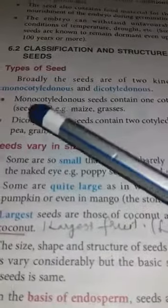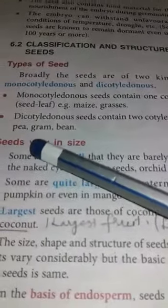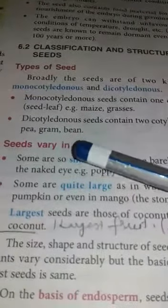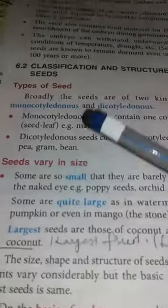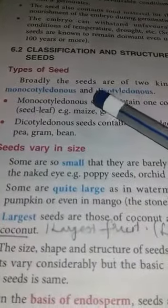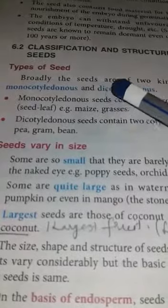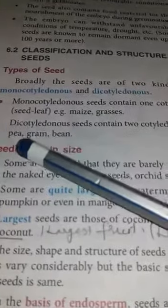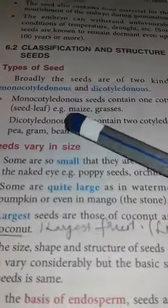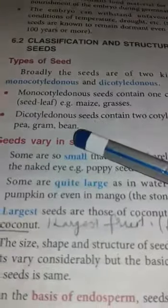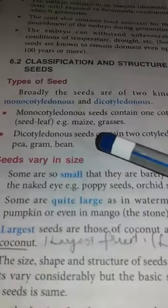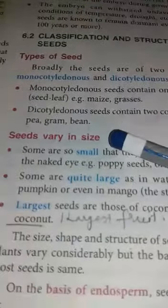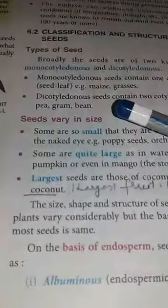Examples of dicotyledons include pea, gram, and bean. In general language, monocotyledon seeds cannot be broken down into two parts, whereas dicotyledon seeds can be broken down into two parts. There is also a variety of seeds — some are very small and some are quite large.